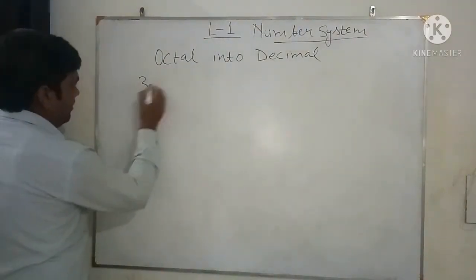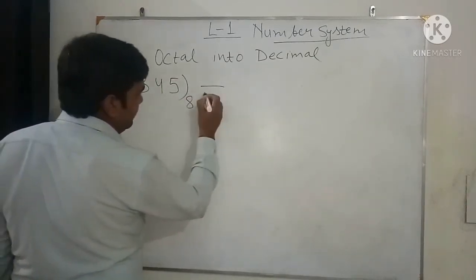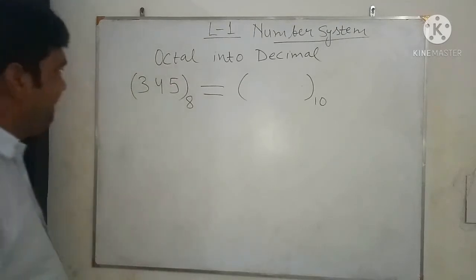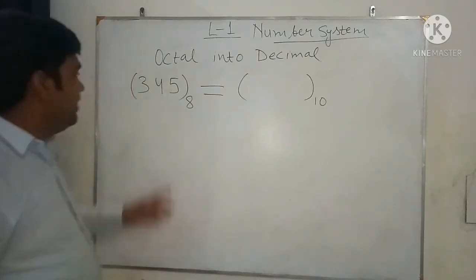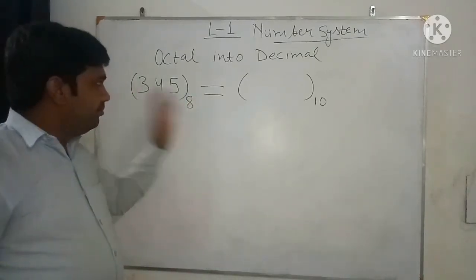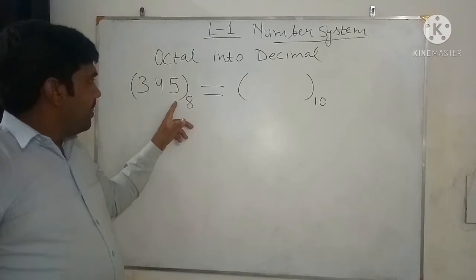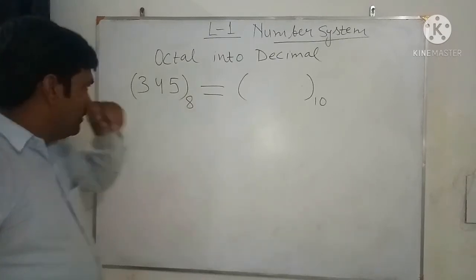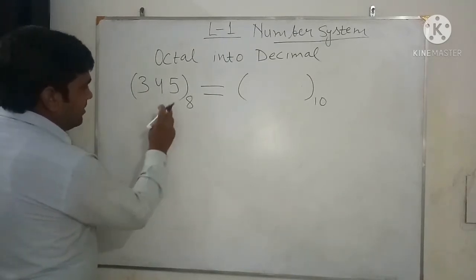Let's take the example 345 in octal and convert it into its equivalent decimal number. Just as we did in binary to decimal conversion, we multiply each digit of the octal number system by its positional value.